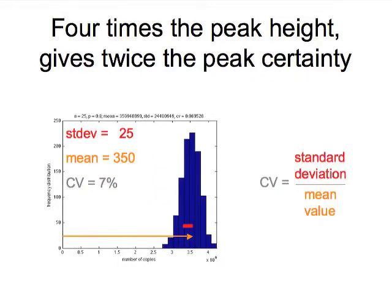A basic rule of statistics, or of chemistry or any sort of mass action, is that when you make measurements, if you have four times the measurements, you get twice the certainty. The same is true with STR peaks. Four times the peak height will give you a probability distribution yielding twice the peak certainty.